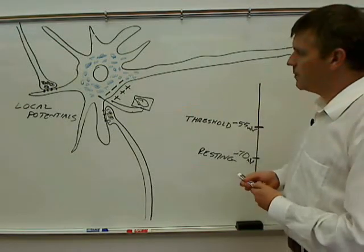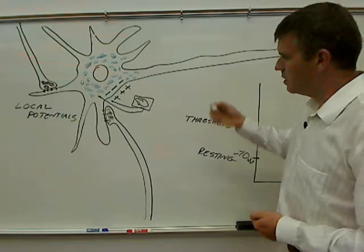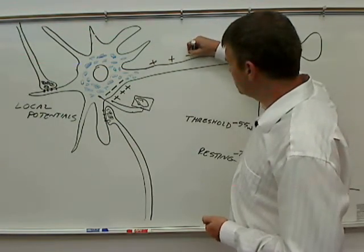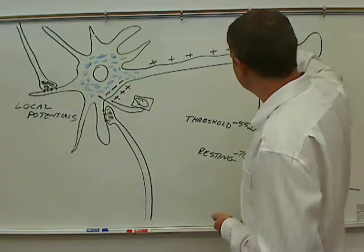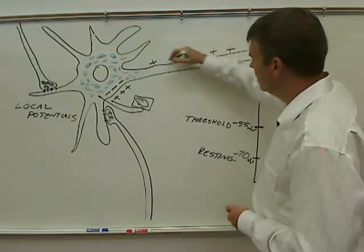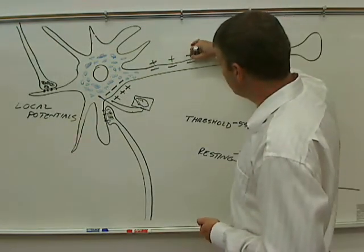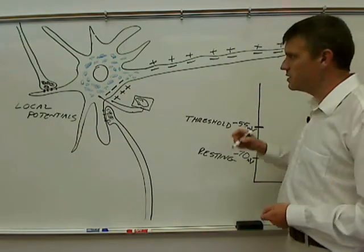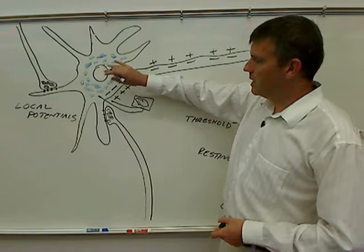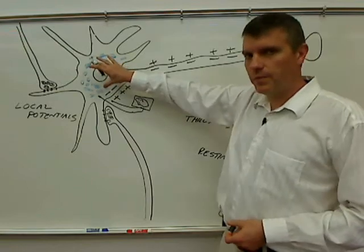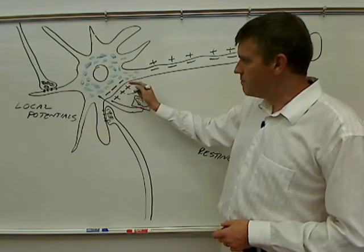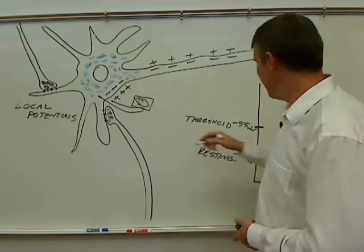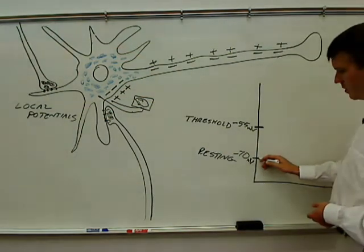For the axon, what's happening, they're called action potentials. And I'm going to show you action potential in two different ways. You may remember action potential from the muscle cell, or muscle fiber. Let's say that the local potentials over here made the axon hillock, or the trigger zone, go positive enough to reach threshold.